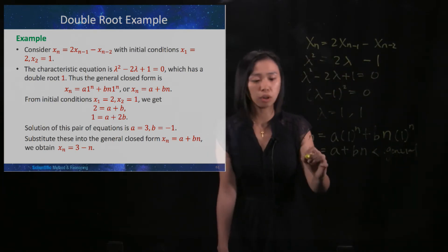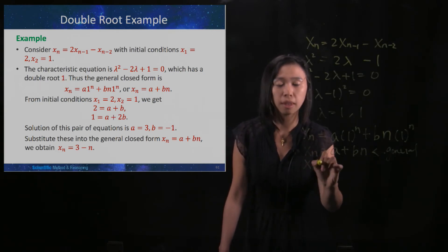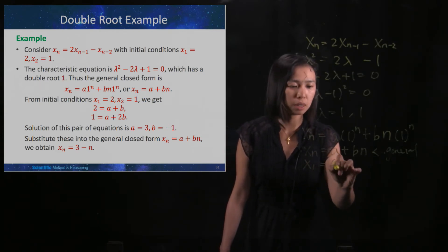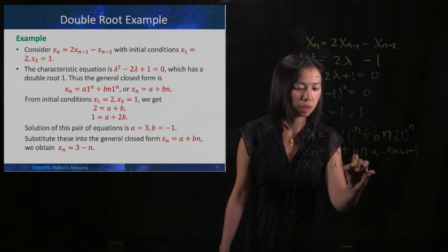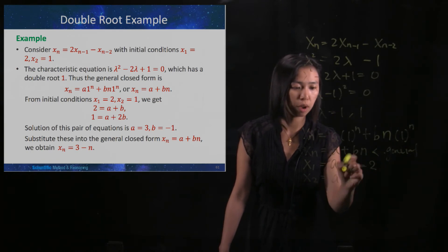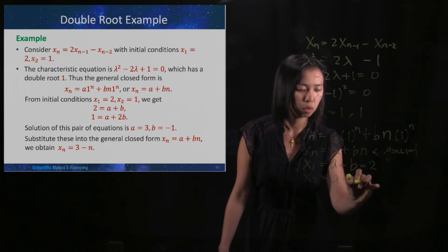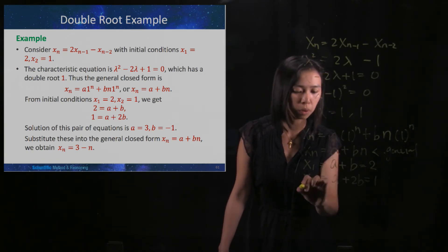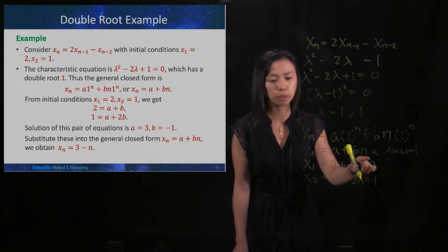The question gives us the initial conditions, which is x1 equals 2, so I substitute n to be 1, which is 2. And I will substitute n to be 2, then we have a plus 2b, which is 1. And I will solve this simultaneous equation.